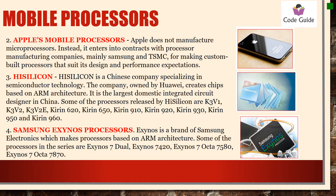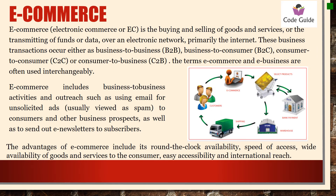Samsung Exynos processor is a brand of Samsung Electronics which makes processors based on ARM architecture. Some of the processors in the series are Exynos 7 Dual, 7420, 7 Octa 7580, and Octa 7870. Other mobile processors are also available but these are the popular ones in the market.